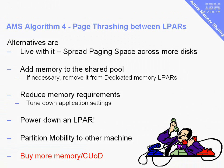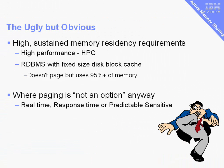There are some places where AMS would not make sense. Anything with a very high sustained memory resident requirement — for example, high performance computing — is very memory intensive and won't benefit from AMS. Large databases can have a large cache full of disk blocks, and they don't like these being paged out, particularly if they're using all of that cache memory very frequently. There are also workloads where paging is simply not an option: real-time applications, response-time sensitive applications, and applications that need very predictable response times can't tolerate AMS paging things out behind the scenes without their knowledge.